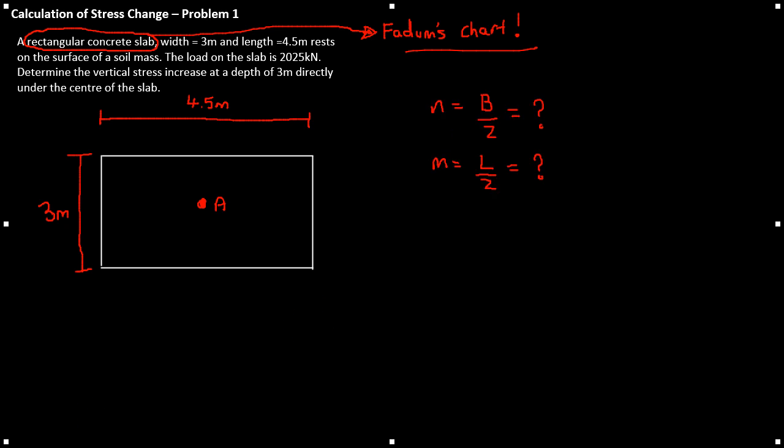N is equal to B over Z. Z being the depth of the point below the foundation, so in this case Z equals 3 metres. M is equal to L over Z.